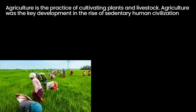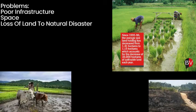Agriculture is the practice of cultivating plants and livestock. It is also the key development in the rise of sedentary human civilization. The problems in agriculture are poor infrastructure, loss of land to natural disasters, and most importantly, space.